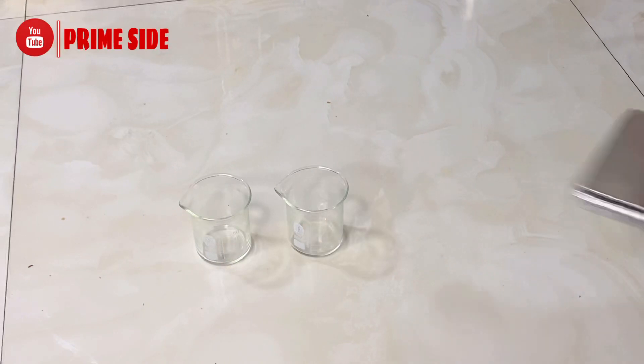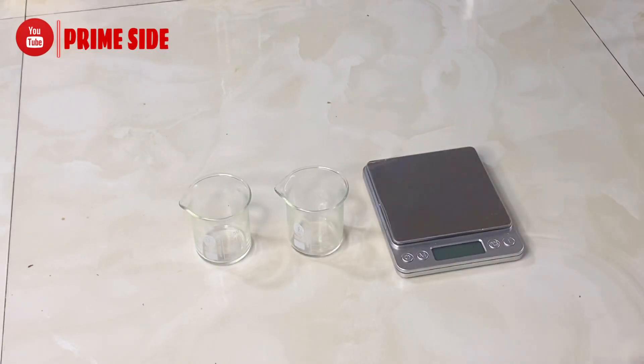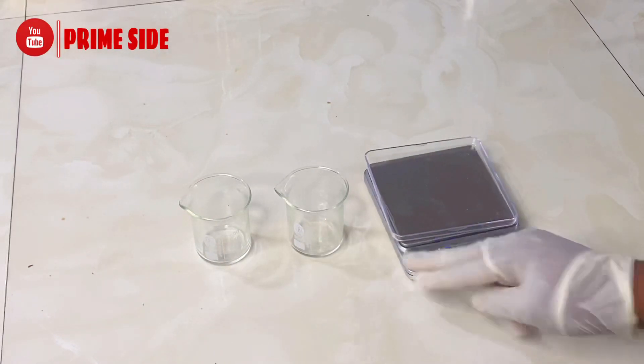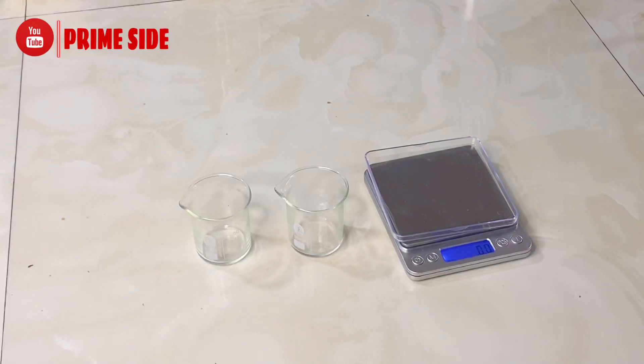So let's go straight to our experiment. Here I have two beakers, and into these two beakers I'll be measuring up five grams of salicylic acid each respectively.